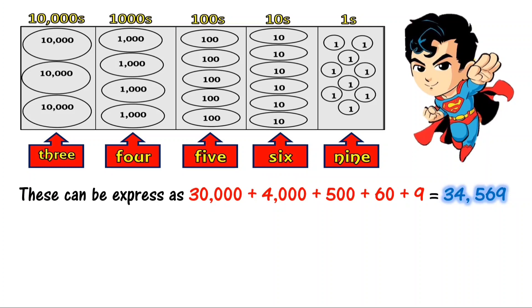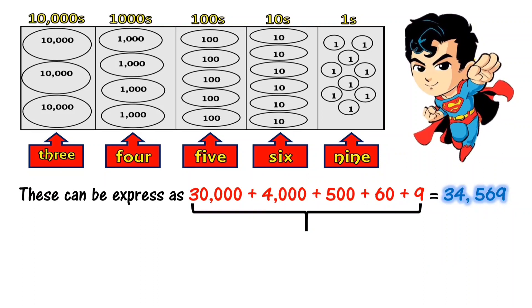This can be expressed as 30,000 plus 4,000 plus 500 plus 60 plus 9, which equals 34,569. This is called expanded form.